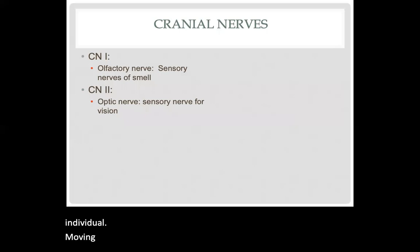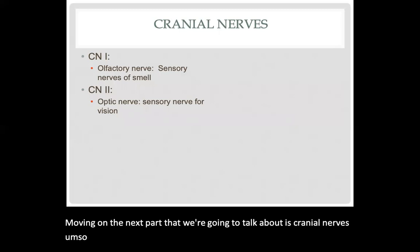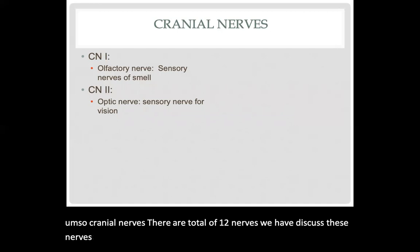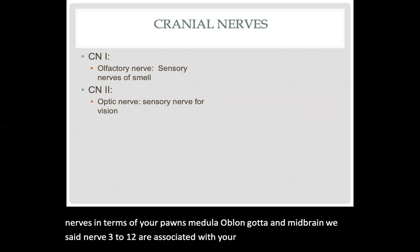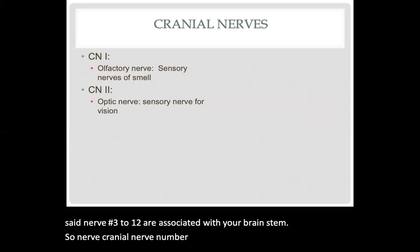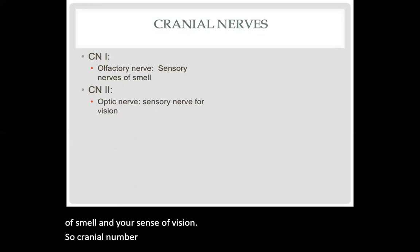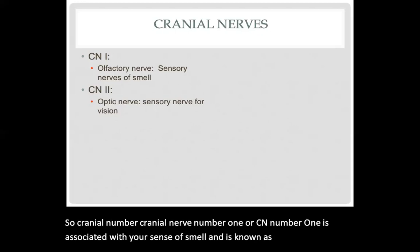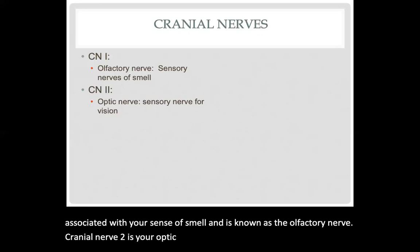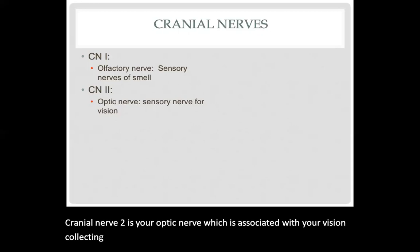Moving on, the next part we're going to talk about is cranial nerves. There are a total of 12 cranial nerves. We discussed these nerves in terms of the pons, medulla oblongata, and midbrain — nerves three through 12 are associated with your brainstem. Cranial nerves one and two are not associated with the brainstem. Cranial nerve number one, the olfactory nerve, is associated with your sense of smell. Cranial nerve number two is your optic nerve, associated with vision — collecting data and sending it to the occipital lobe.